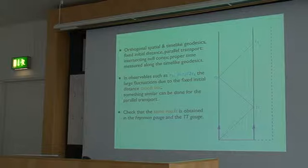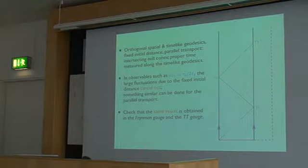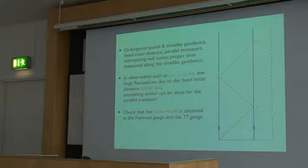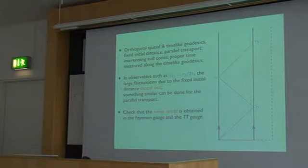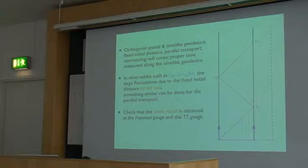To be sure that you have diffeomorphism invariant observables, one would need to take averages over Lorentz transformations — over different boosts — along this direction, and take an average over all possible boosts. One has to be careful because the Lorentz group is non-compact, which makes this a little subtle. The whole point is to check that you get the same result when you use a covariant gauge like the Feynman or harmonic gauge versus the TT gauge.